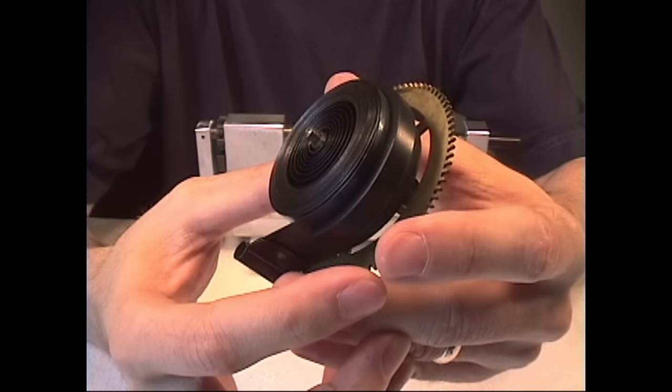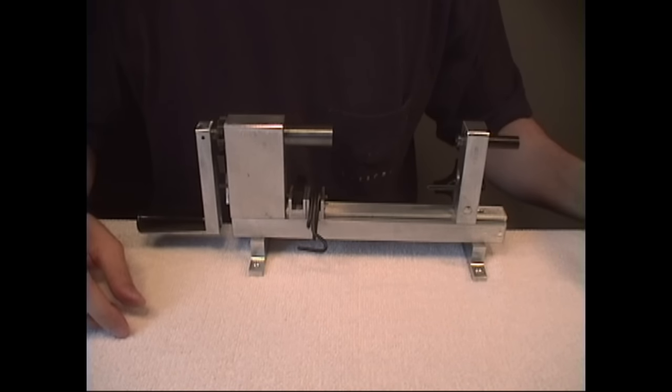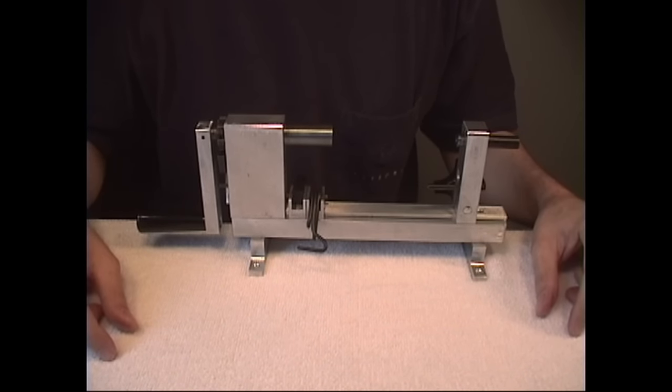Now in order to do that, we have to use what's called a mainspring winder. Now there's several different kinds on the market. This is called the Ollie Baker style.